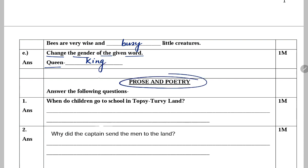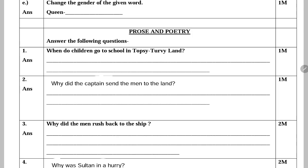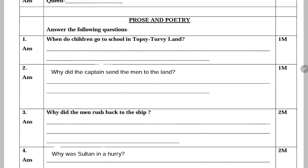Next competency is process and poetry. Is mein aapki book se question answers honge. First: When do children go to school in topsy-turvy land? Topsy-turvy land mein bachche school kab jaate hain? Maa per sab ulta hota hai, bachche school raat mein jaate hain. So, in topsy-turvy land, children go to school at night.